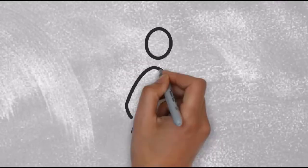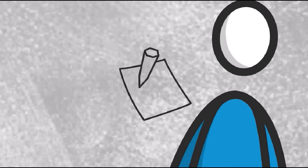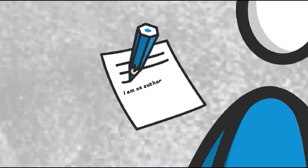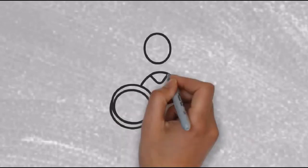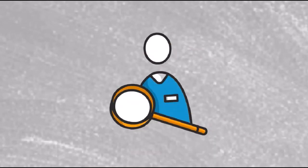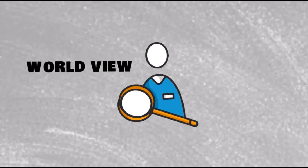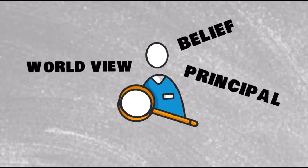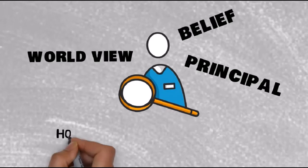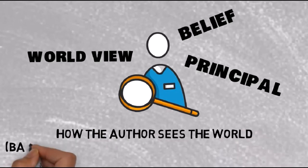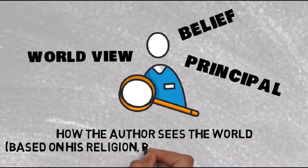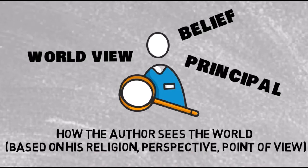This category describes the extrinsic elements related to the author or the writer. The first one refers to the author's worldview, belief, and principle. The work of literature is made based on how the author sees the world — based on his religion, perspective, and points of view. Thus the work will be subjective. For example, if the author is Christian, he can write more about Christianity, and if he is Muslim, he writes more about Islam and its traditions.